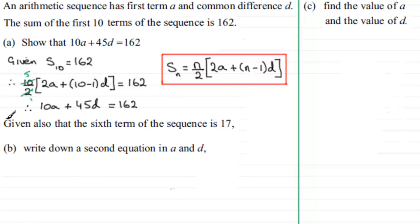Now for the next part, we're given also that the sixth term of the sequence is 17. And we're asked to write down a second equation in A and D. And to do this, you've got to be familiar with the formula for the nth term of an arithmetic sequence.